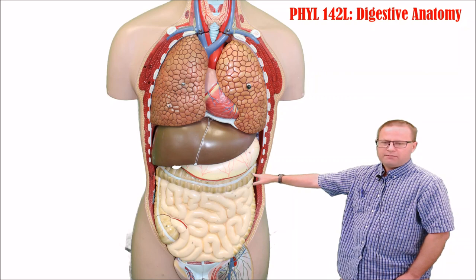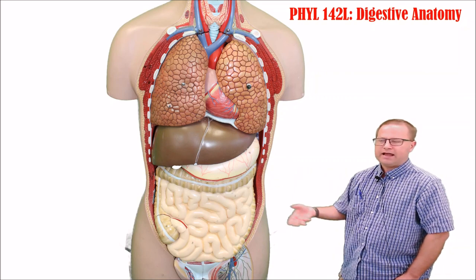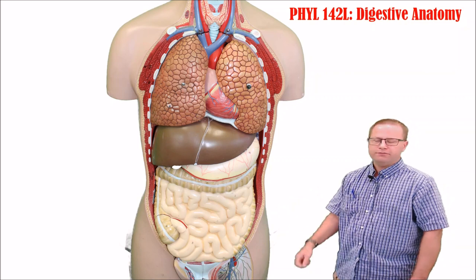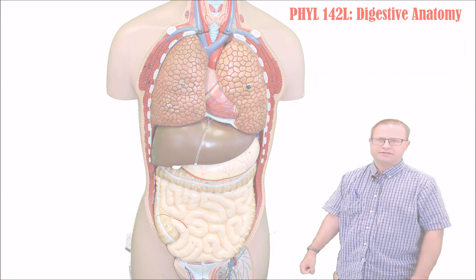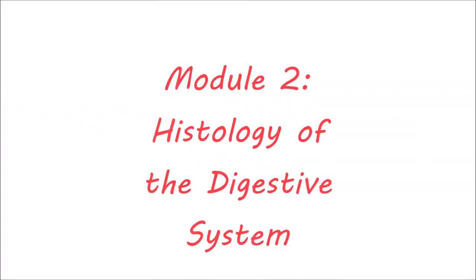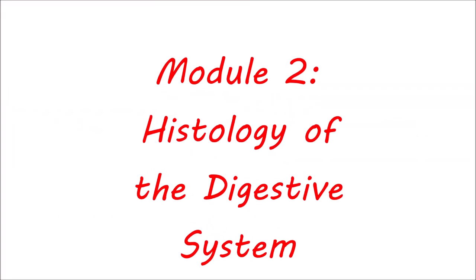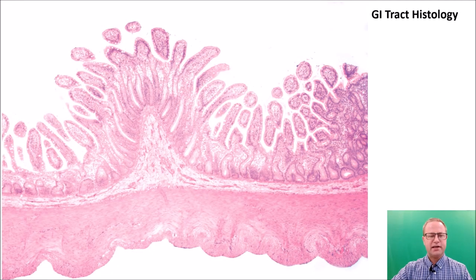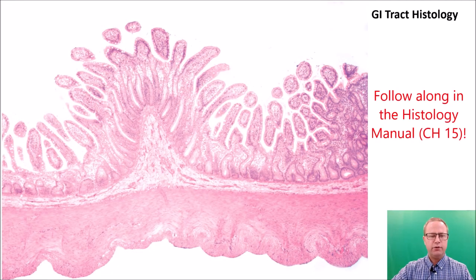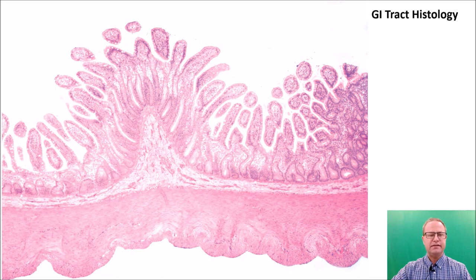That's pretty much all I'm holding you responsible for on this particular model. The other model has more information you should know for quizzes and your exam. Welcome back to our second module, which is on the micro-anatomy of the digestive system — that is, the histology of the GI tract and the accessory organs.